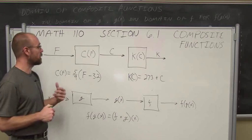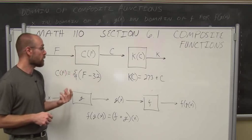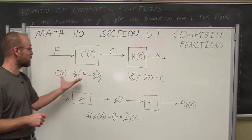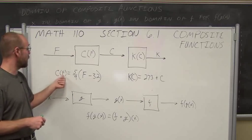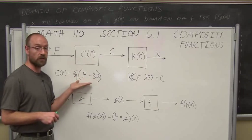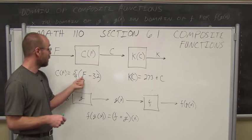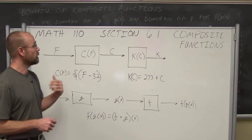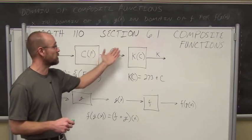Let's look at an example. One application we may have in the sciences is converting temperatures. To convert Fahrenheit to Celsius, we have a function that describes the relationship between the two temperature scales. Celsius as a function of Fahrenheit is (5/9)(F − 32), where F is the temperature in degrees Fahrenheit. So if the temperature is 32°F — the freezing point — 32 minus 32 is 0, and 5/9 of 0 is 0°C. In a lot of the sciences, we use the SI system of temperature.